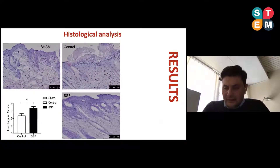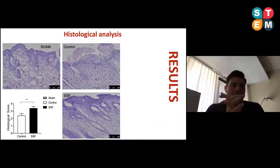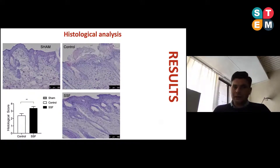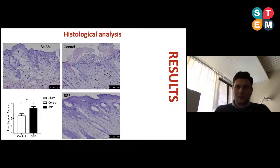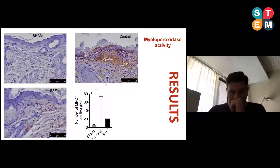We then observed the skin structure from a histological point of view. As we can see from this picture, the group treated with snail secretion filtrate compared to the control group showed a better organization of tissue and skin structure, comparable to that of sham or normal mice.